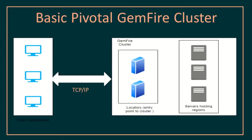This is the basic Pivotal GemFire cluster. On the left-hand side we have our client applications connecting to the GemFire cluster. The GemFire cluster comprises mainly of locators and servers. Locators can be considered as service discovery as well as load balancers — they contain all the information about all the servers. Whenever a new server comes up it registers with the locator, and whenever it goes down the locator removes that information. Clients connect to the locators to get information about the servers. Servers are the main part of the cluster where data is hosted, in the form of regions.